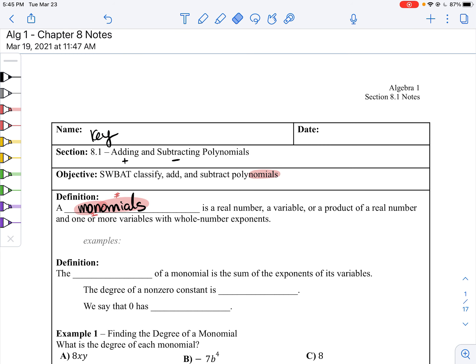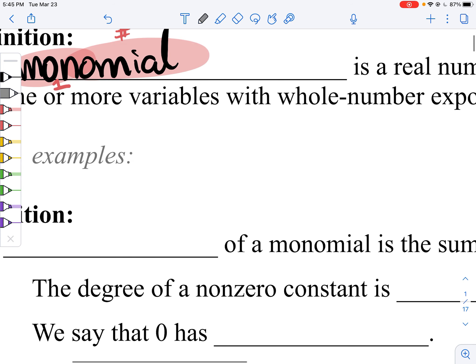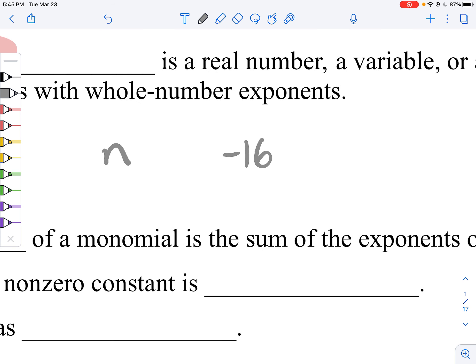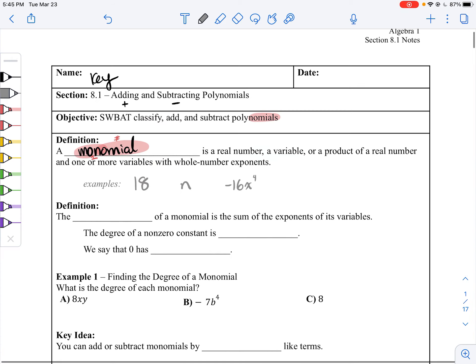A monomial is a real number, a variable, or a product of a real number and one or more variables with whole number exponents. So examples of monomials are just like one term. Examples could be 18, or some number n, or negative 16x to the fourth power.